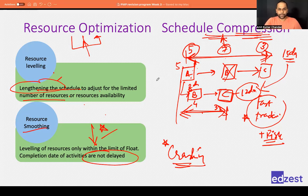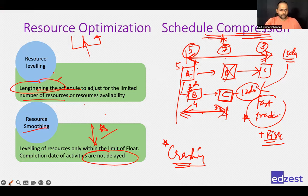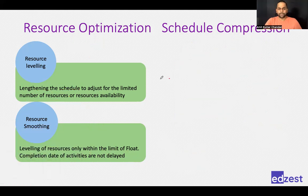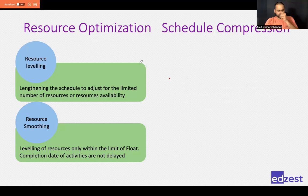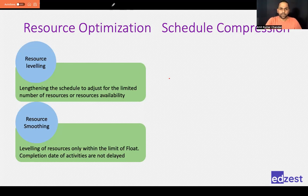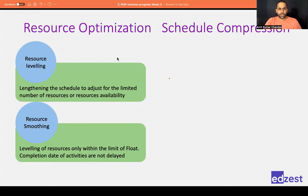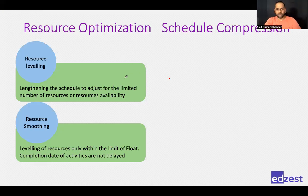A participant asked whether resource smoothing and crashing are the same. The distinction: resource smoothing's objective is to use the same number of resources throughout the project and complete on time — it is about resource optimization. Crashing's objective is to reduce the schedule duration by adding resources. With fast tracking, you add risk and potentially reduce quality. With crashing, you add cost.